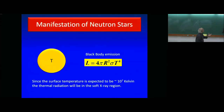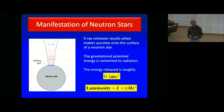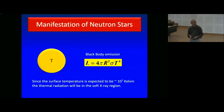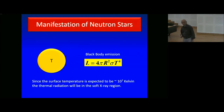Let us look at the possible manifestations of a neutron star. The most elementary one is that it is a body at a temperature of several million degrees, so it will emit blackbody radiation. You estimated yesterday afternoon that this spectrum will peak in the soft X-rays. With the Chandra Observatory, you can see lots of neutron stars through their blackbody emissions, some of them many thousands of years old.